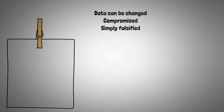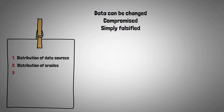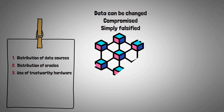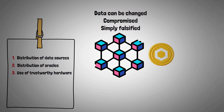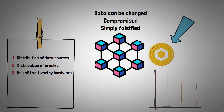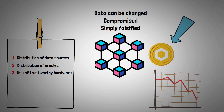In their white paper, they highlight three concepts to reduce the possibility of oracle failure: one, distribution of data sources; two, distribution of oracles; and three, use of trustworthy hardware. For example, a real-world money transfer can be sent onto the blockchain using Chainlink through Swift. The evidence of payment might then be sent back to Swift via Chainlink. Swift's use of Chainlink allows for seamless interaction between the traditional and crypto worlds while reducing potential failure spots.